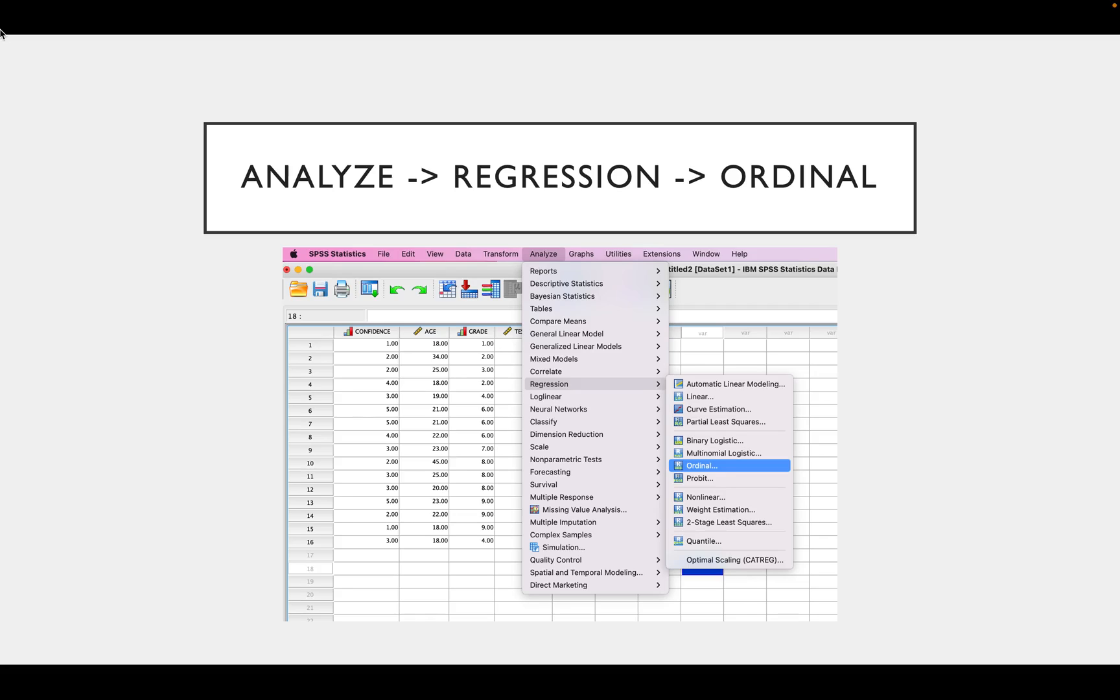So to run an ordinal regression in SPSS, you go to Analyze, Regression, and then Ordinal.